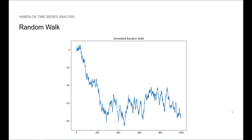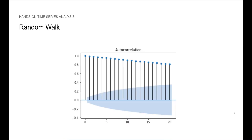Here is an example of a random walk process that we will generate later with Python. There is not much we can say about this time series since we know that it is a purely random process. Looking at the ACF plot for this time series, we see that the autocorrelation is very high at first and slowly decreases. This is indicative of a trend.